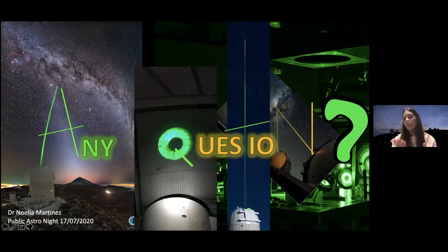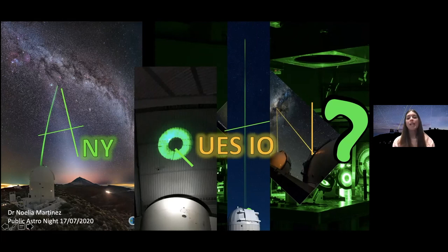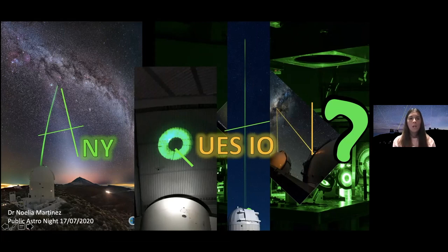Why orange and green? Those are the colors that are most effective. Green is most effective for seeing the Rayleigh reflection on dust particles. Orange is required because it matches the sodium wavelength. There were people investigating other colors — some research using blue lasers, looking at the different Rayleigh return they could get — but so far orange and green are the most common ones.